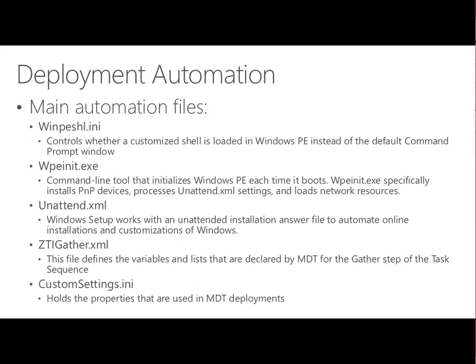Some of the main automation files we'll use include the Windows PE shell ini file, the Windows PE init file, and the unattend.xml file. These are the custom tools we can use to leverage through MDT, manage Windows PE if we're creating a custom Windows PE environment, or simply do an installation using an unattended file. Most of them we can edit through a GUI environment; the first two give us the ability to make management changes directly.